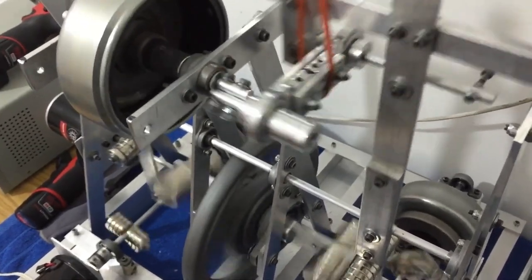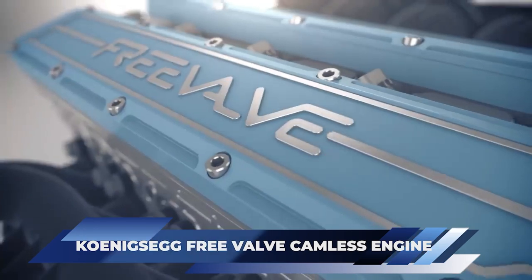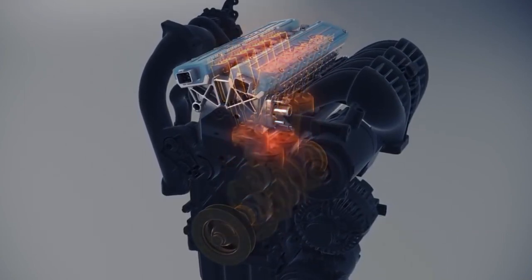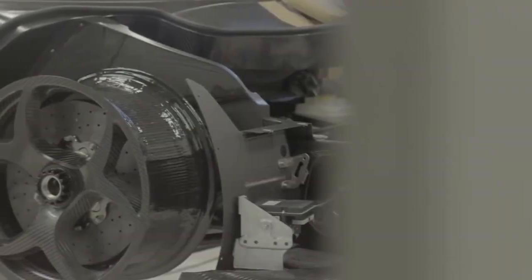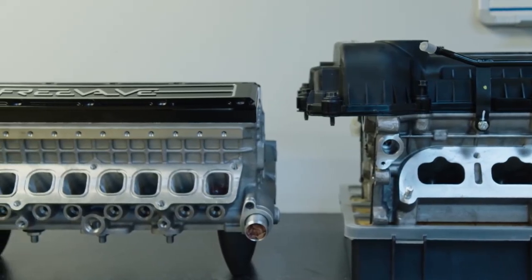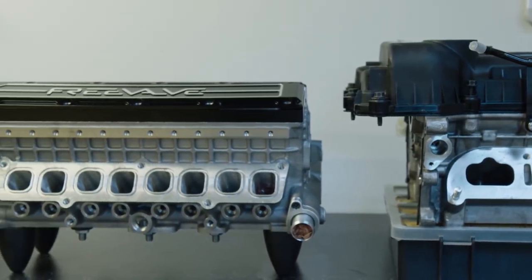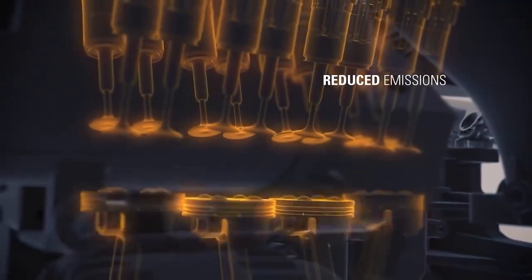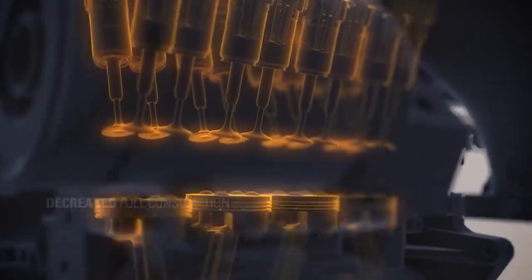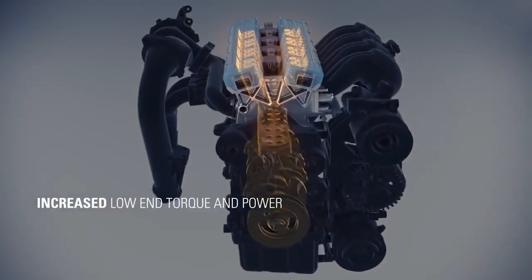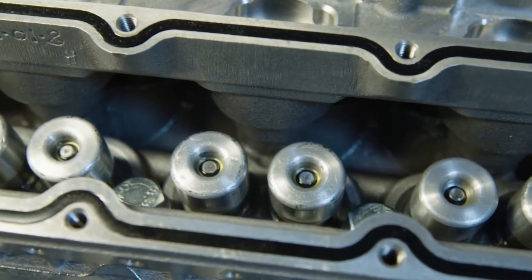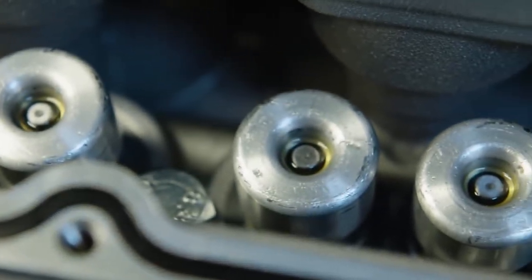The Koenigsegg Free Valve Camless Engine: Unleashing a wave of revolutionary advancements, the Swedish company has spearheaded groundbreaking engineering feats. From their gearbox-replacing direct drive to pioneering the world's first full-carbon fiber wheels, their ingenuity knows no bounds. Among their exceptional innovations stands the Free Valve Camless Engine, a true marvel in its own right. Shattering conventional norms, this engine ditches the camshaft and throttle body, employing pneumatic actuators atop each cylinder. This ingenious setup grants unparalleled control over valve and cylinder, optimizing efficiency and even allowing for cylinder shutdowns.